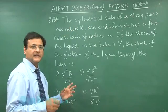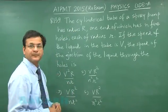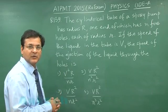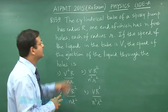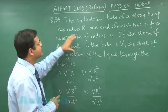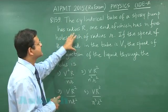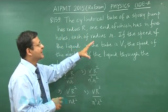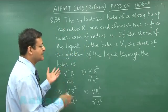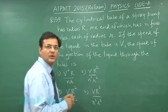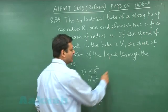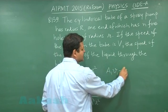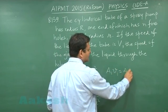Question 139 is based on the equation of continuity. A cylindrical tube of a spray pump has radius R, one end of which has n fine holes. We apply the formula a1v1 = a2v2.